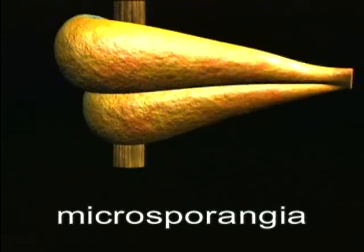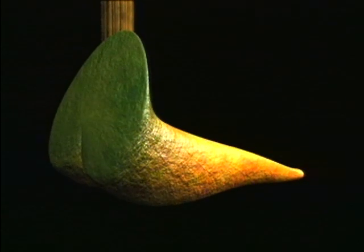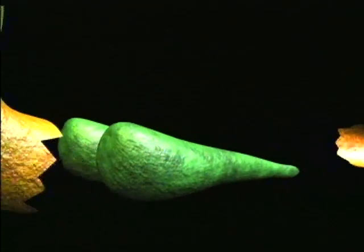On the underside of each sporophyll, there are two microsporangia. An outer epidermis covers the sporophyll and its sporangia.